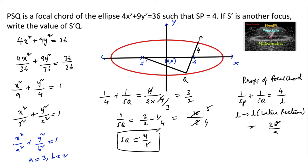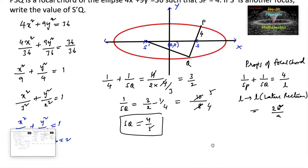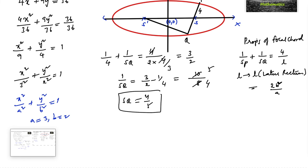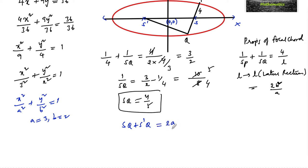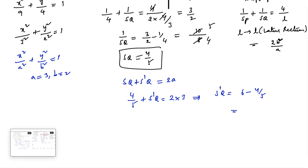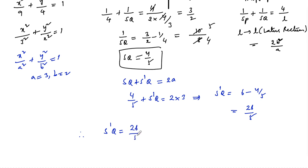Also from the properties of an ellipse, SQ + S'Q = 2a, which is the length of the major axis. So 4/5 + S'Q = 2×3 = 6. Therefore S'Q = 6 − 4/5 = 30/5 − 4/5 = 26/5. The length S'Q is 26/5.